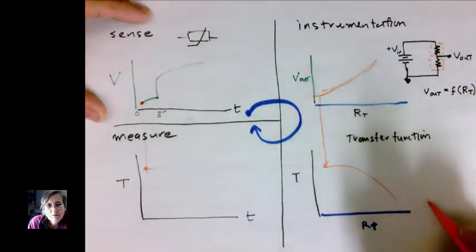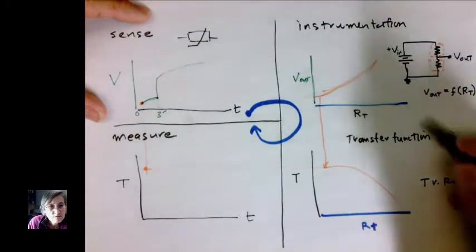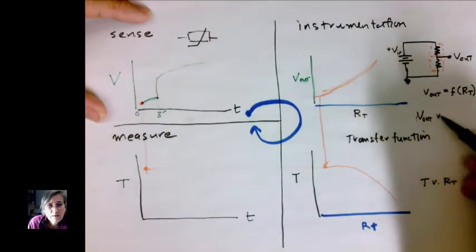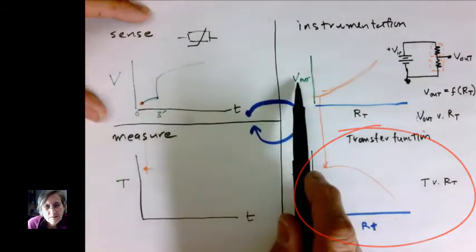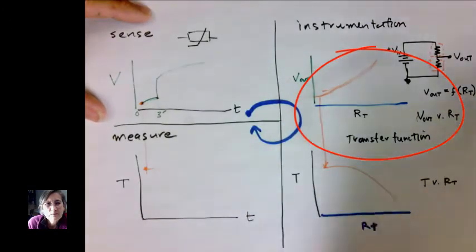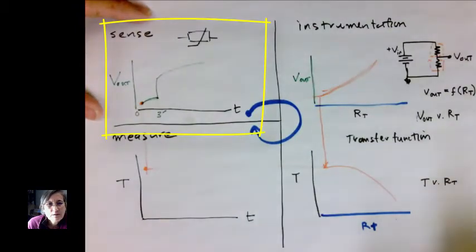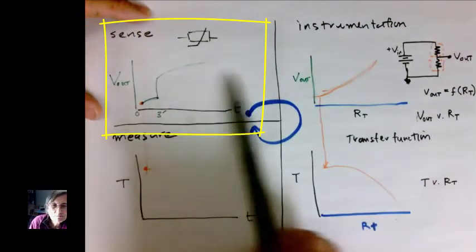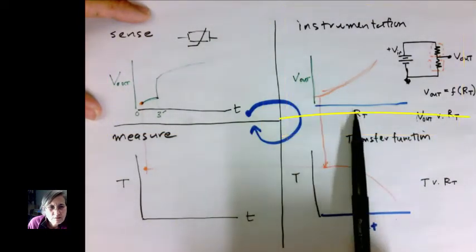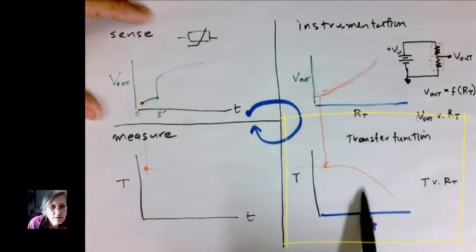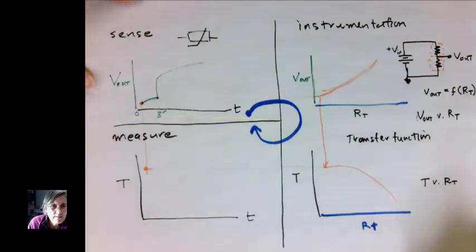Again all we're doing here is using the instrumentation and mathematics. We will have a transfer function temperature versus thermistor resistance and V out versus thermistor resistance. We take the voltage, convert it from voltage out to resistance, from resistance to temperature and then back into the temperature versus time domain and that will give us our graph.